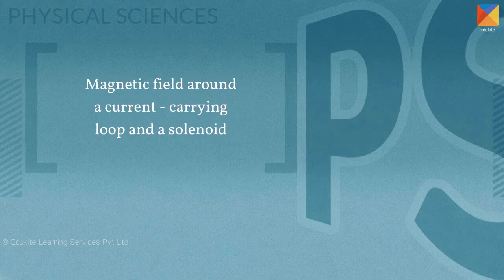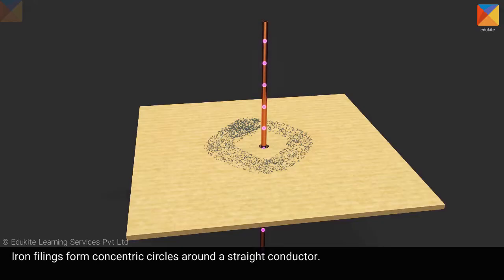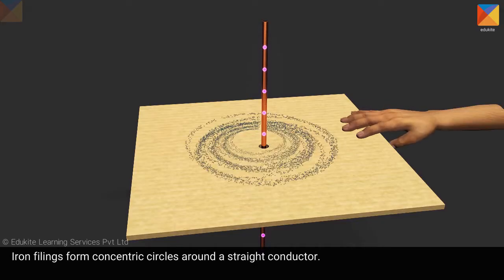Magnetic field around a current carrying loop and a solenoid. Iron filings form concentric circles around a straight conductor.